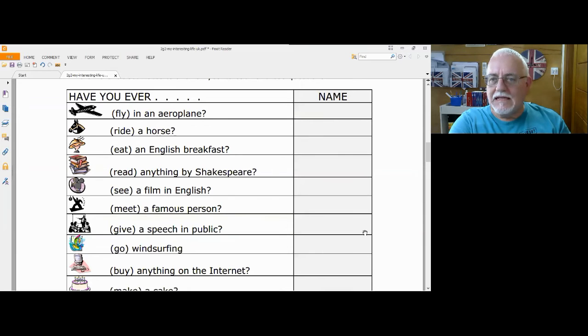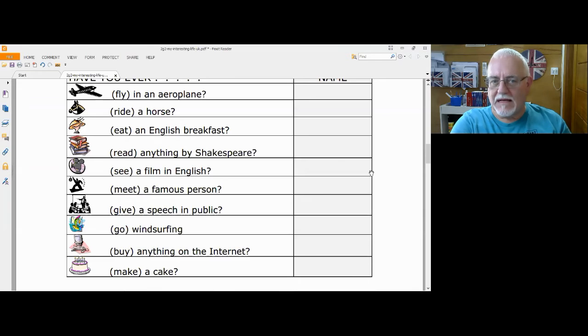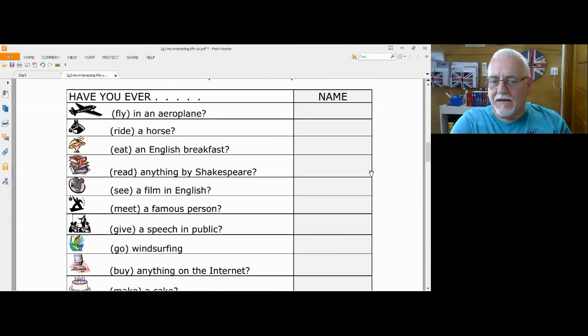So when you've done that, there are some more questions here. Now, the idea with these questions is, and I'll just move my video over there. You'll see it says name, because the idea is that they ask friends or family. And the question is, have you ever? And then you have to use the correct form of the verb.